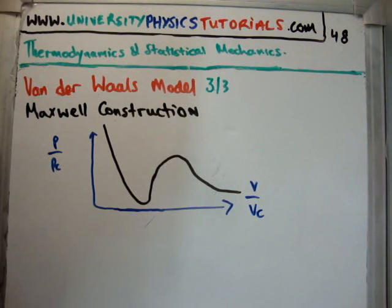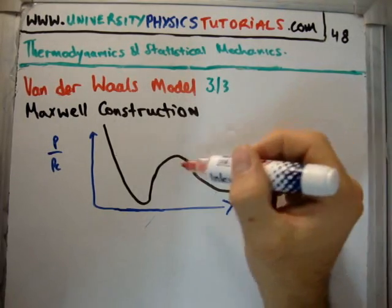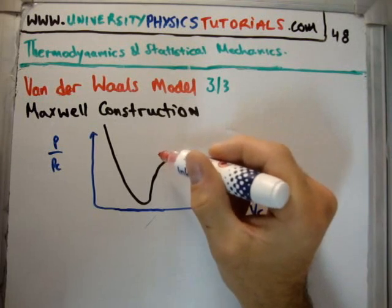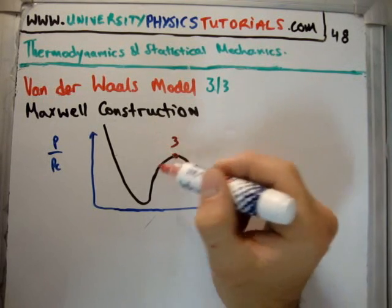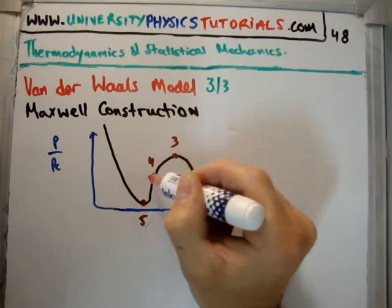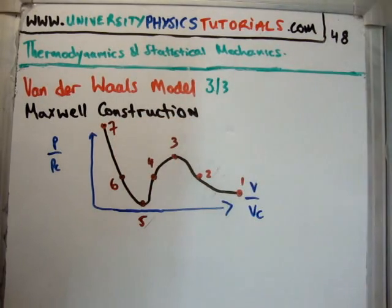So, I'm going to mark some points on it. I'm going to call this point here 1, this point here 2, this point here 3, this one here 4, this one 5, this one 6, and this one 7.